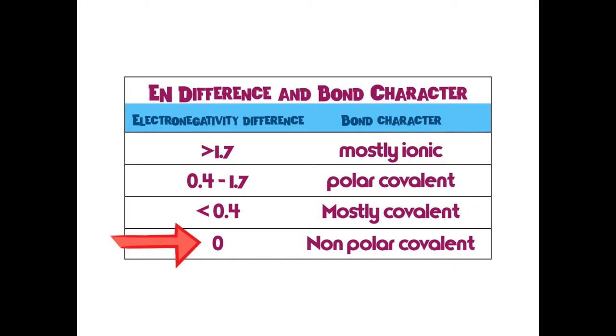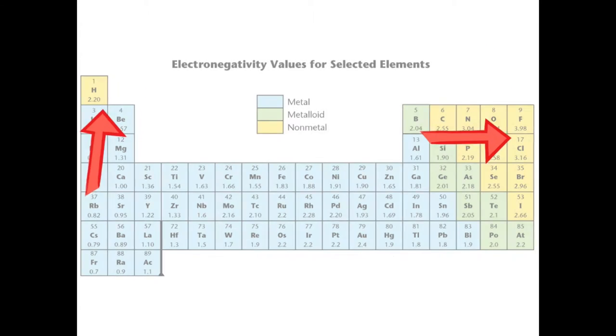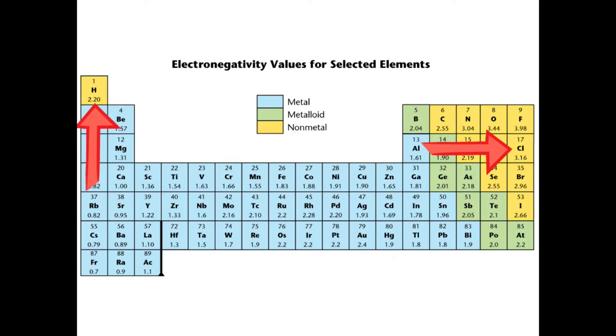So let's put some practical definitions to these terms, because I know it's still probably confusing. Let's look at the periodic table. Let's say we have a bond between hydrogen and chlorine, hydrochloric acid.